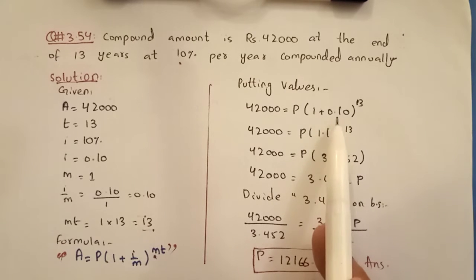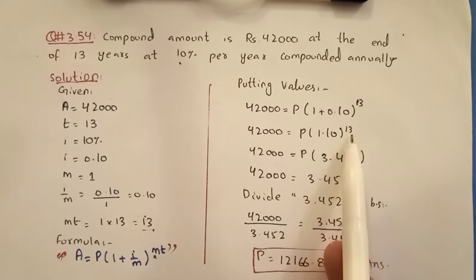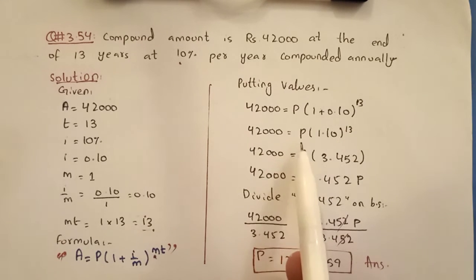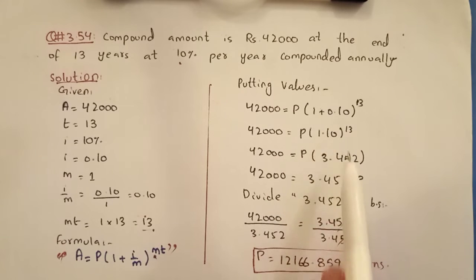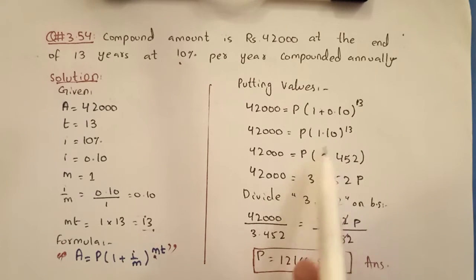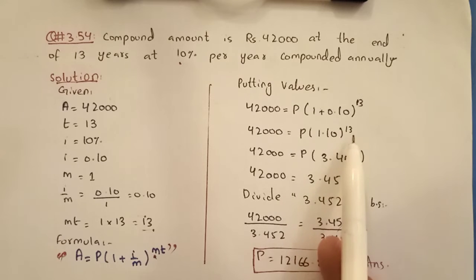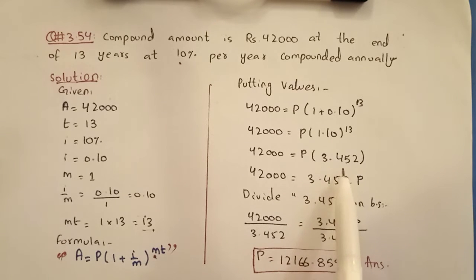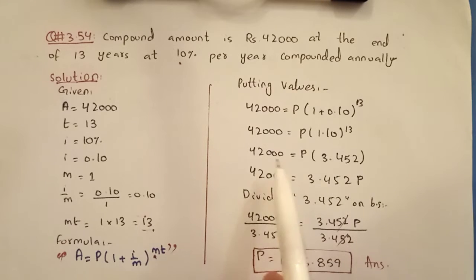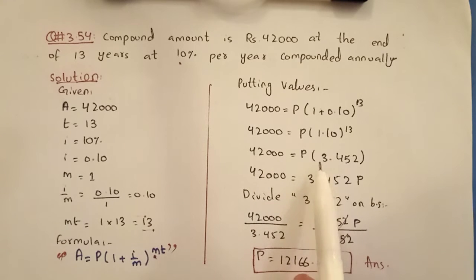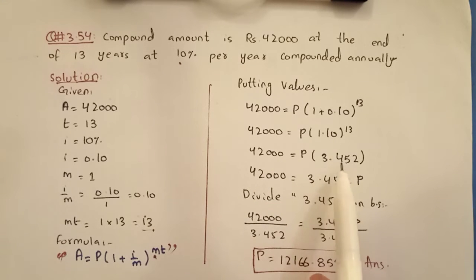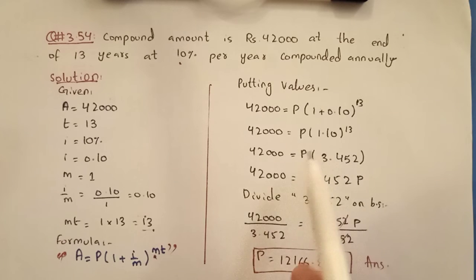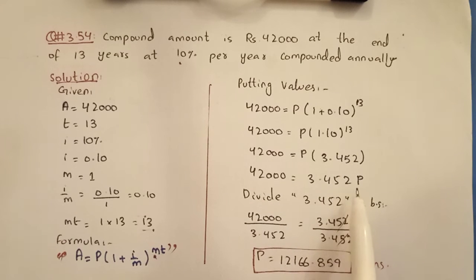Now we solve the bracket first, then find the power. So 42,000 is equal to P times 1 plus 0.10, giving us 1.10 to the power 13. When we calculate 1.10 to the power 13, we get 3.452. So 42,000 is equal to P multiplied by 3.452.